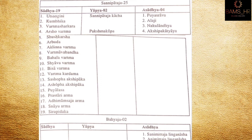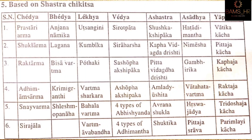Now regarding shastra chikitsa, it is very important to understand which netraruga is treated by which shastra. Chedya is done in: prastariya arma, ashukla arma, raktarma, adhimantha arma, and snayu arma. Sirachala is also chedya. Bhedya diseases include: anjanamika, lagana, bisavartma, krimigranthi, shleishmana — as well as utsangini, kumbika, putaki, vartma sharkara, bahala vartma. Vedya diseases include: sirotpata and sirosha.